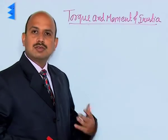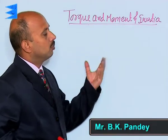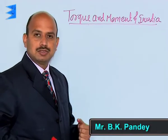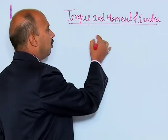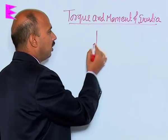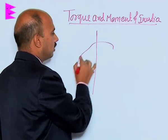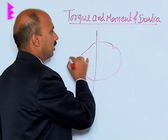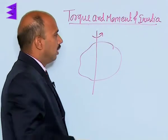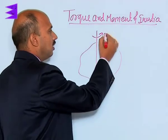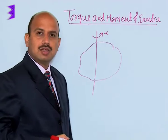Now we will discuss the relation between torque and moment of inertia. Suppose a rigid body is rotating about axis z with angular acceleration alpha.